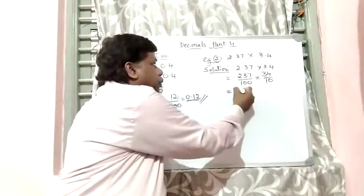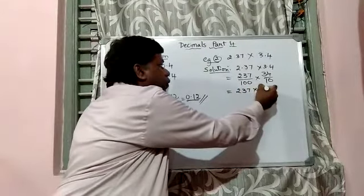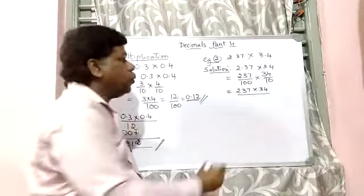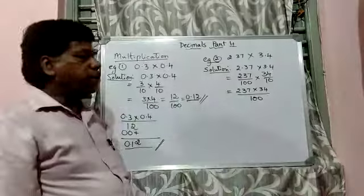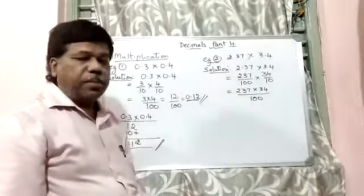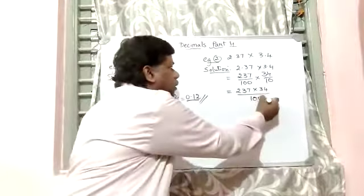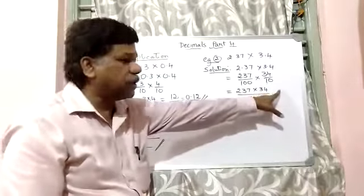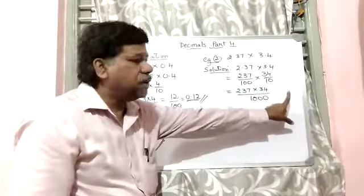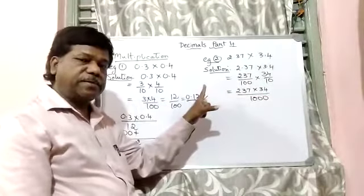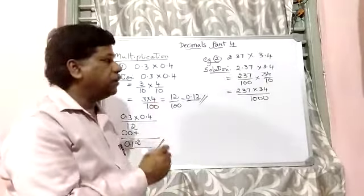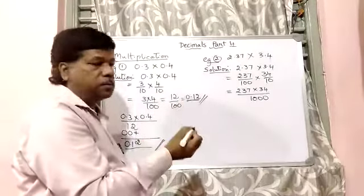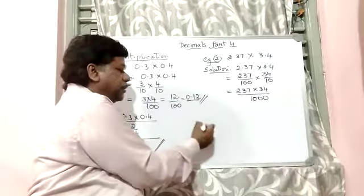So this is equal to 237 multiplied by 34, the whole thing divided by 100 into 10. 100 into 10 is 1000. Now all you have to do is multiply these 2 numbers above and after 3 places, the product, whatever you've got the product here, after 3 places from the right side towards the left side, put the point. So what will I get when I multiply 237 by 34? So let us do this here.